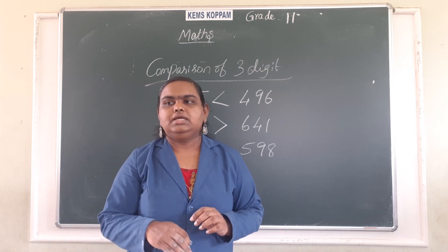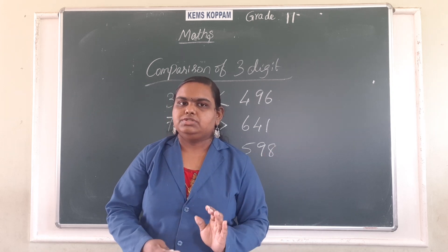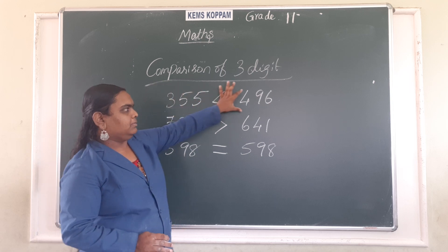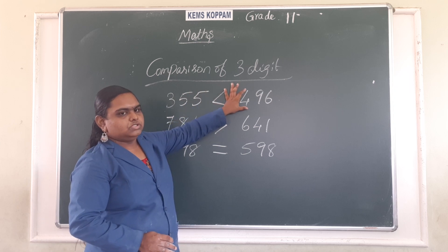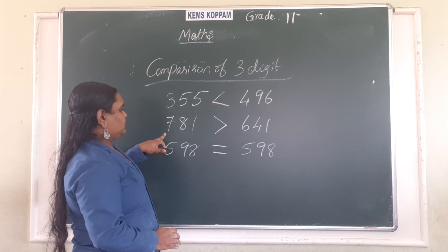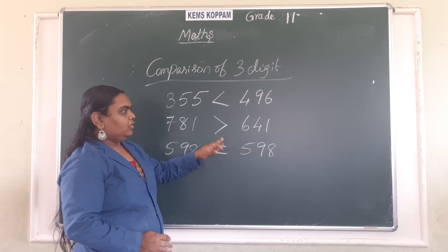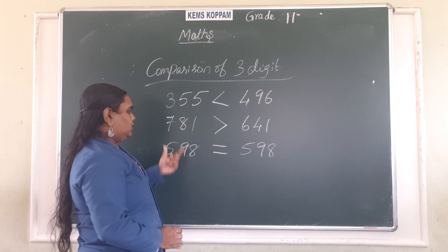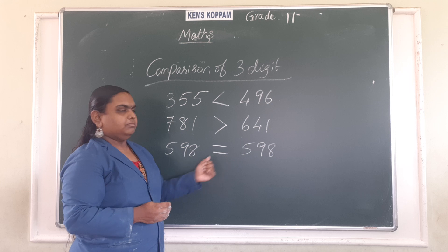We already learnt this in the previous class for comparison of two digit numbers. Same thing we are going to learn for three digit numbers — there is no other change. First we have to see the first digits. Three hundred and fifty-five starts with three, four hundred and ninety-six starts with four, so four is the greatest. Seven hundred and eighty-one starts with seven, six hundred and forty-one starts with six, so seven is the greatest. Five hundred and ninety-eight and five hundred and ninety-eight are equal, so we put equal to.